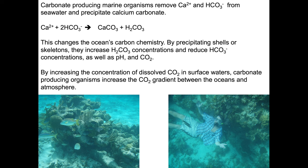Here we can see carbonate producers in Belize. Most of the things visible that aren't fish are carbonate producers. Some soft gorgonians have an organic matrix rather than calcium carbonate, but otherwise these are all calcium carbonate producers. Another image, using my head for scale, shows bioerosion caused by fish chewing up coral and producing finer-grained sediment.